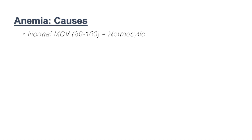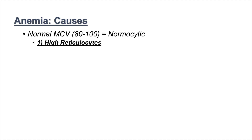When we look at mean corpuscular volumes ranging from 80 to 100, this is considered normal — a normal MCV, considered normocytic. Anemia with an MCV in this range is normocytic anemia. When we have normocytic anemia, we have to do a little extra investigative work. We have to look at the reticulocyte count. Reticulocytes are immature blood cells, and if they're high we need to narrow it down further.